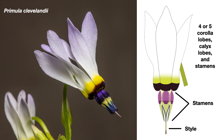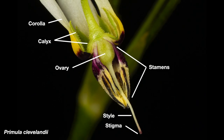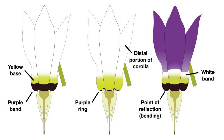Shooting stars have unusual flowers. An understanding of their complicated anatomy is needed for identification. Each flower has four or five calyx lobes and corolla lobes and four or five stamens. When open, one can see the four or five colorful stamens and a long central style. With some of the calyx, corolla, and stamens removed, you can find all the flower parts, such as its simple pistil with a superior ovary. The corolla base is usually yellow, with often a white band above the yellow. Most flowers have a purple to reddish band or ring within or below the yellow, near the point of reflection where the corolla bends backward.